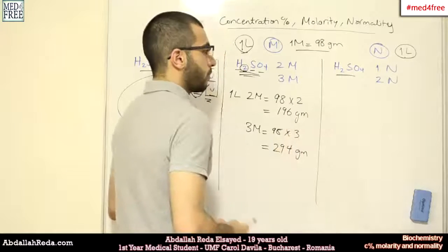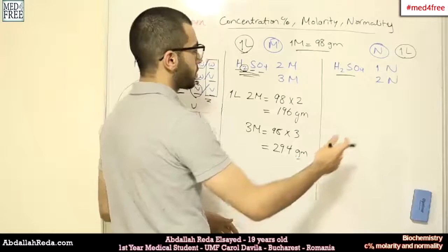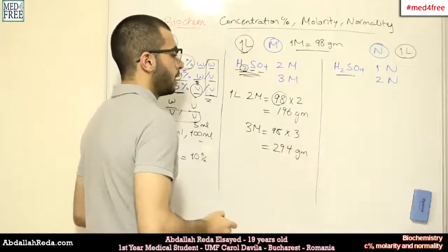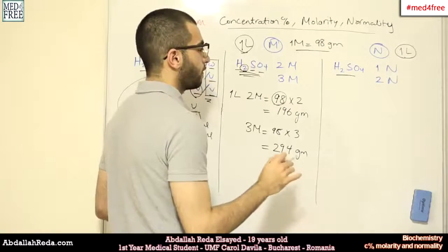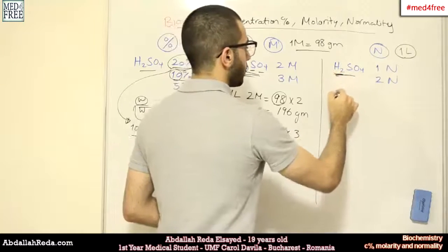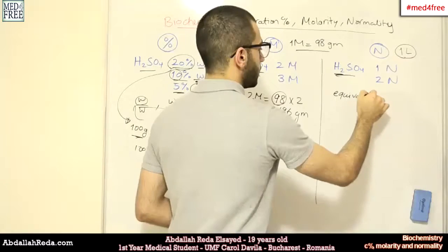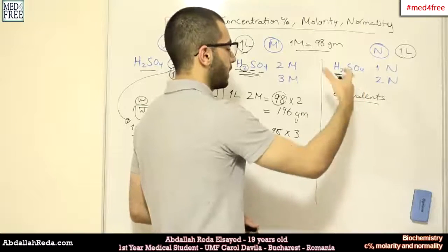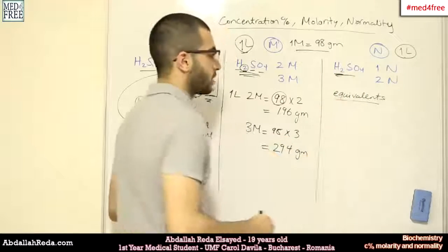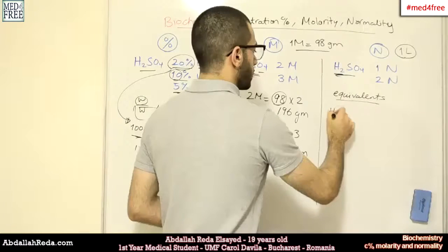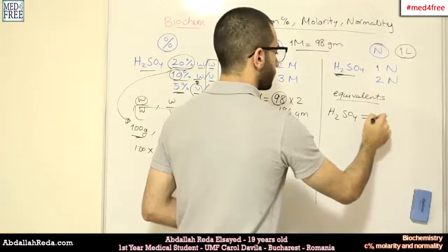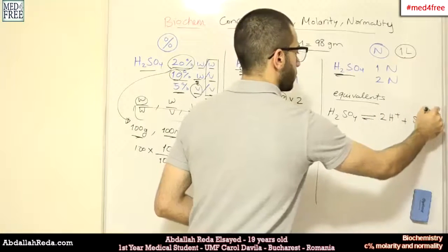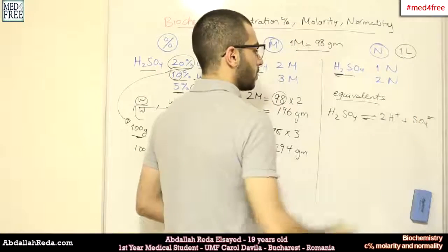Then, finally, we'll talk about normality. Normality is much like molarity, but instead of dealing directly with the molar mass, we divide it by the number of equivalents. And the equivalents are the numbers of hydrogens or ions that dissociate throughout the ionization process. For example, the H2SO4, when it ionizes, it will give 2 protons and a sulfuric group. So, we have 2 here.